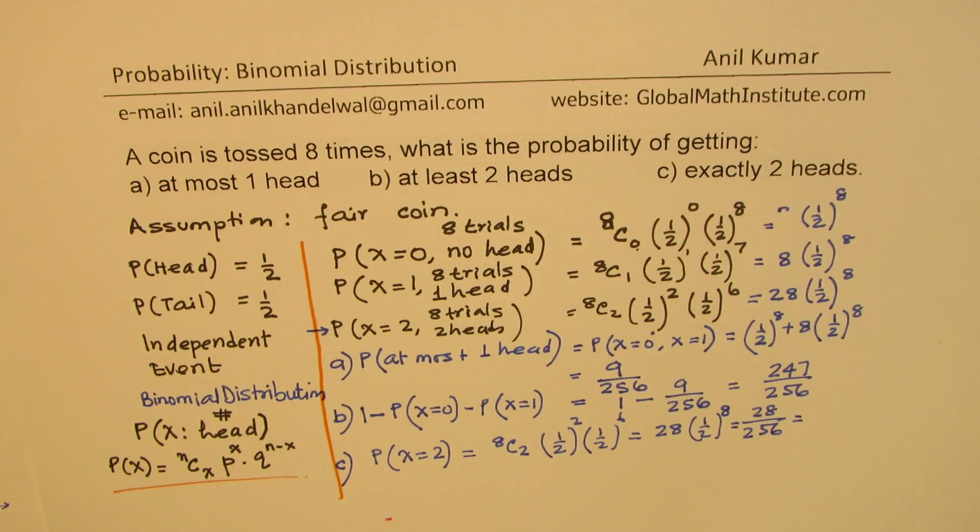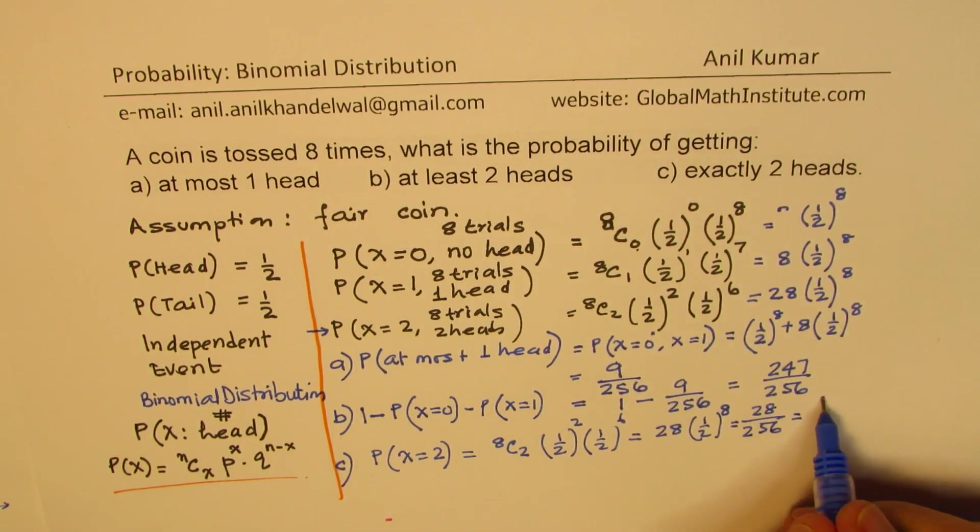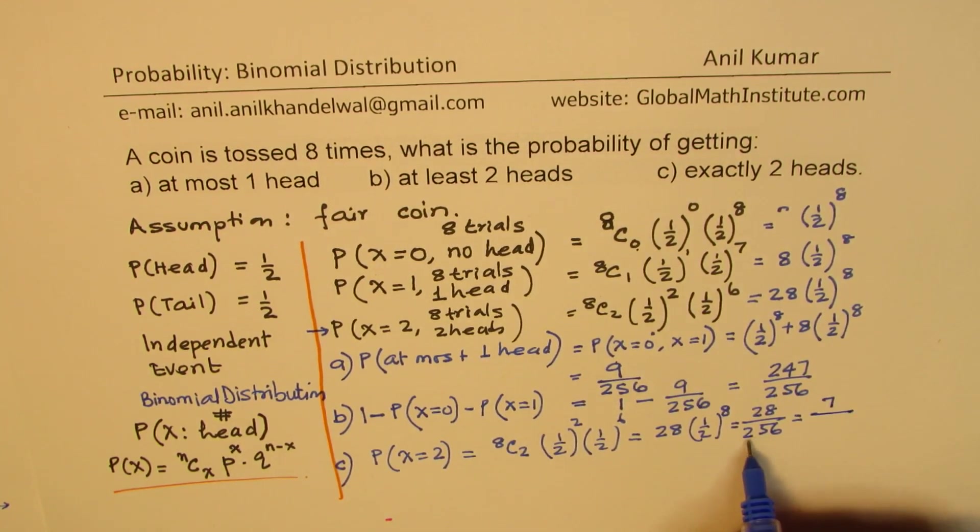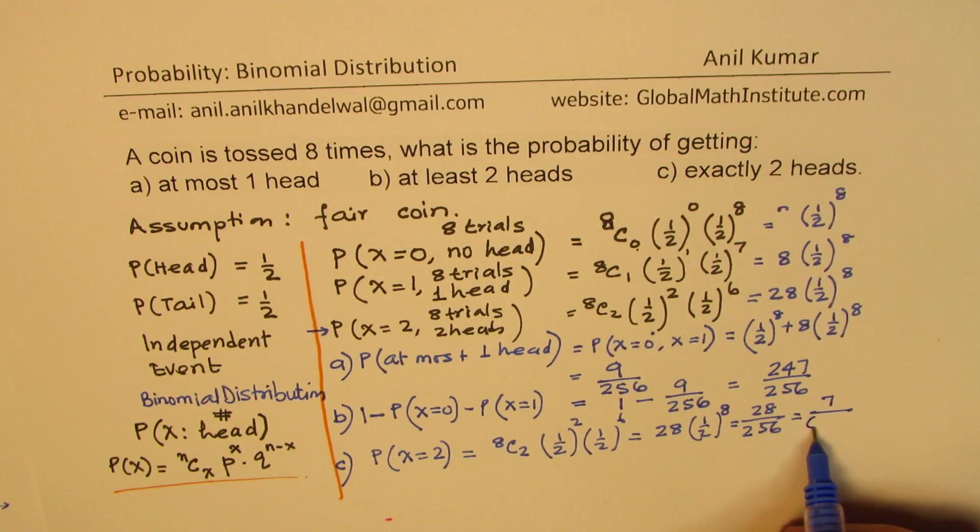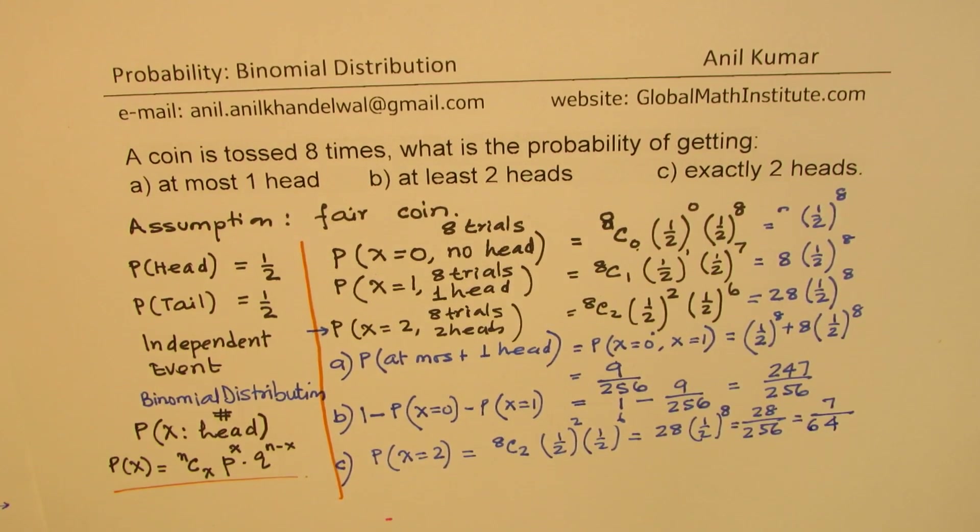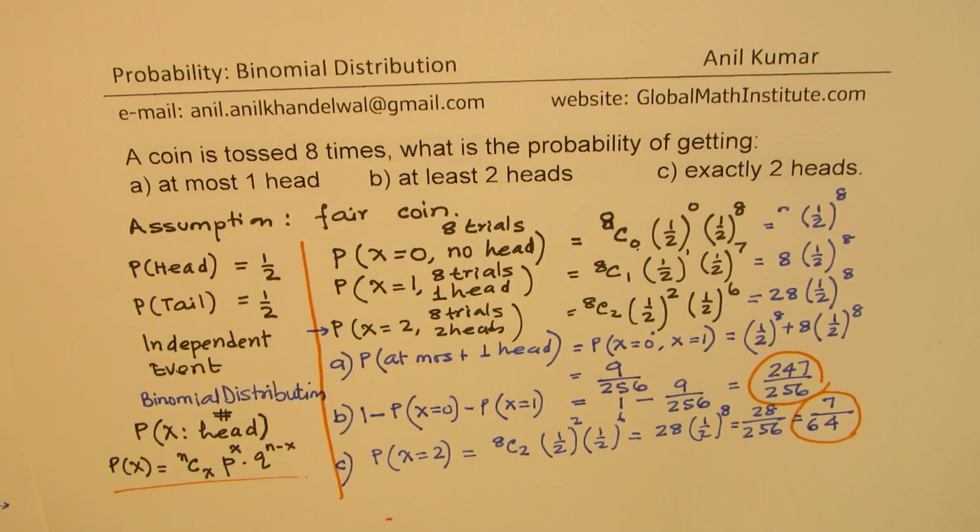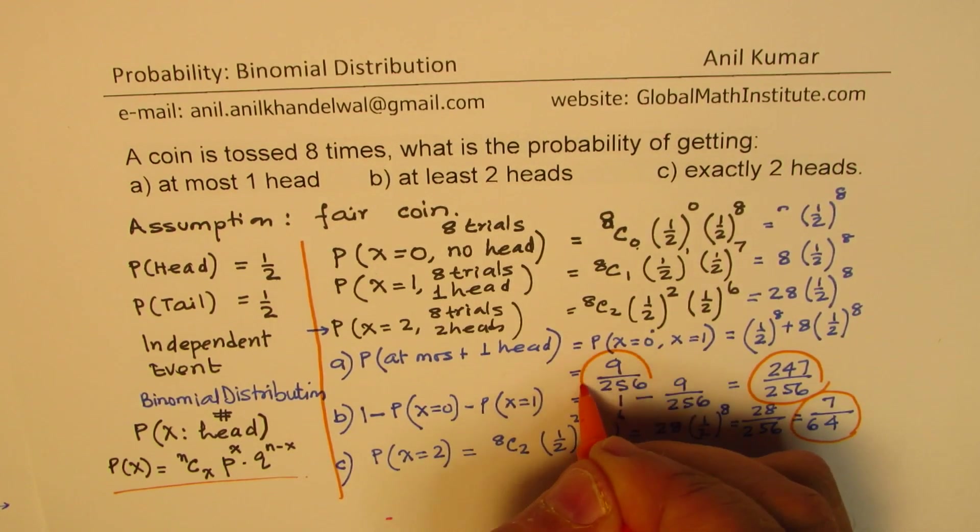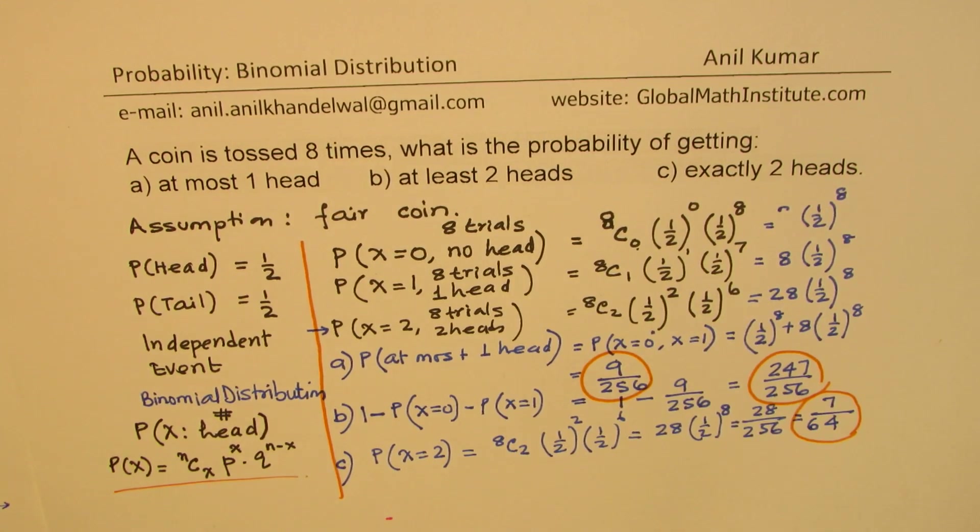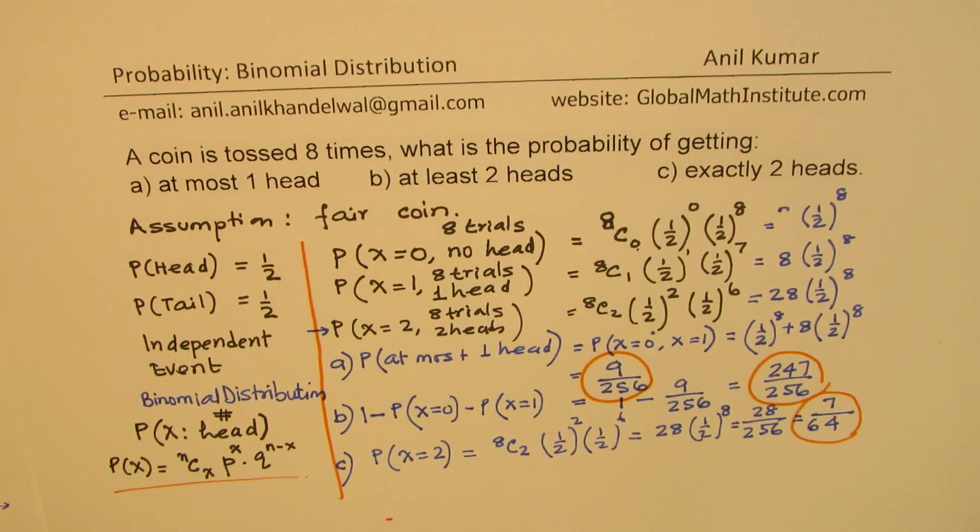So you could simplify this. We can divide by 4. So we get 7 over, dividing by 4, 4 times 6 is 24, 64. So we get 7 over 64 as our answer. So for these three events, the answers will be 7 over 64 for the last one, the second last one is 247 over 256, and the first one is 9 over 256.